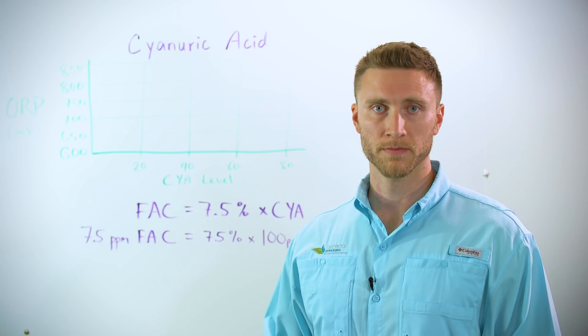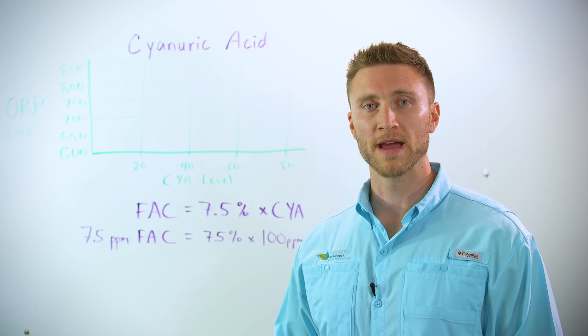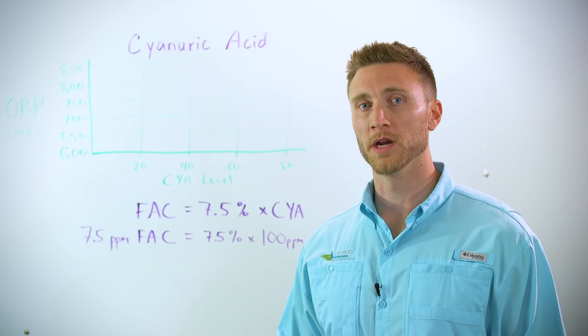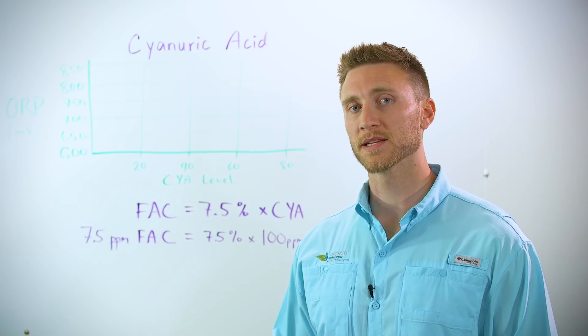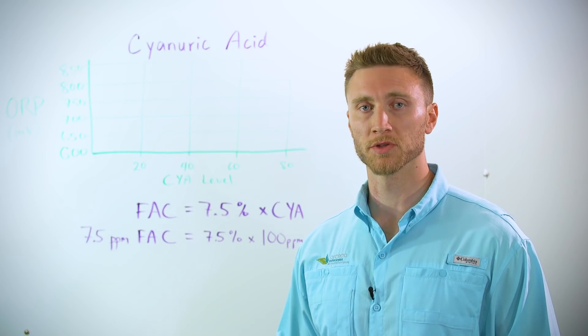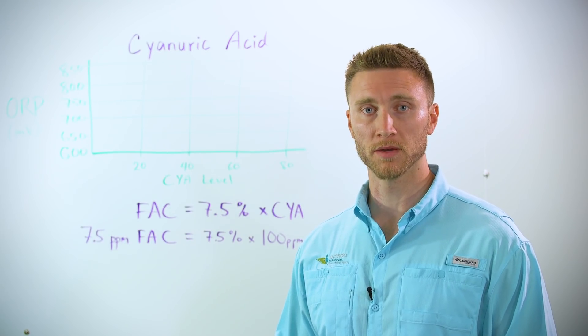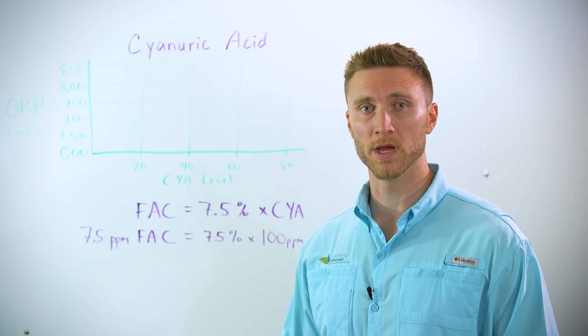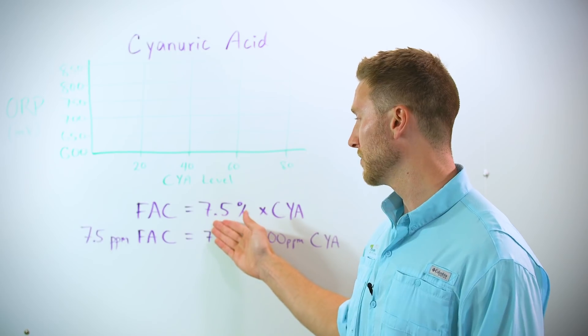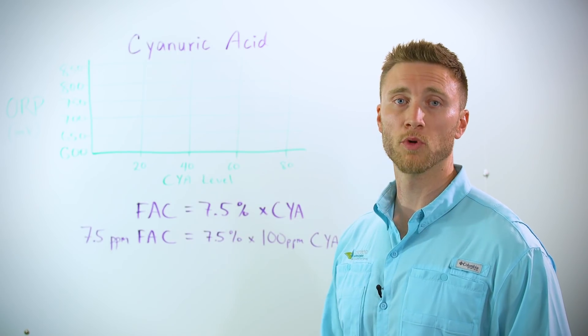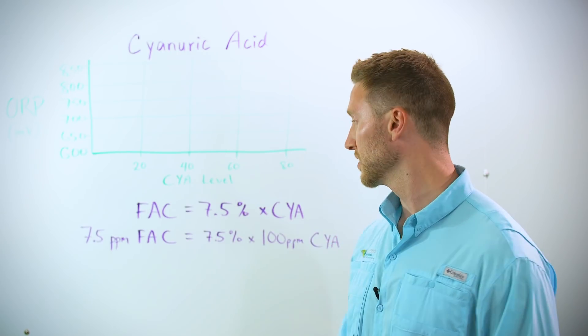Like anything in the pool business, we have to think about moderation, because too much cyanuric acid actually diminishes the strength of chlorine — it will significantly weaken it. That factor happens to be about 7.5 percent.